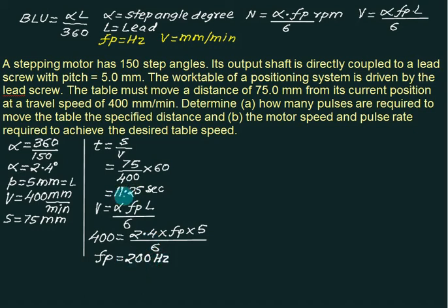But the travel required is 11.25 seconds. So number of pulses fired equals 200 pulses per second multiplied by 11.25 seconds. So this answer is 2250. Number of pulses are required to travel 75 mm.